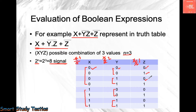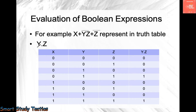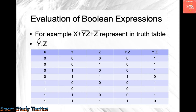Now let's do the calculations. First we solve the dot operator — just like in regular math where we do multiplication first. So let's find y·z: 0·0=0, 0·1=0, 1·0=0, 1·1=1. The important point is: zero zeros are zero, zero ones are zero, one zeros are zero, and one ones are one.